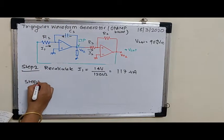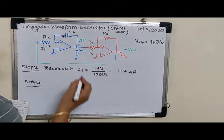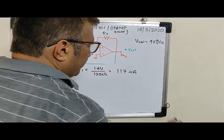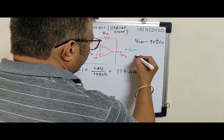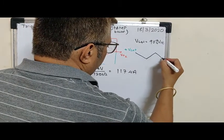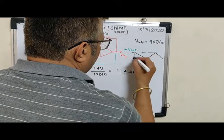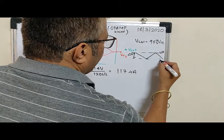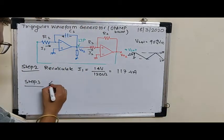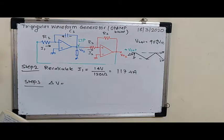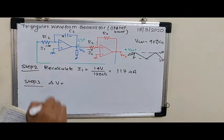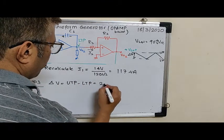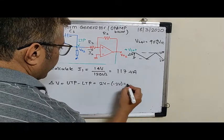Step 3. Now we already have seen that whatever is the difference, that is the delta V. If you remember, this was the output voltage and this was the delta V. It was here at UTP, here it was LTP. So naturally speaking, the delta V, that is the voltage change in the output of O1 is UTP minus LTP. That happens to be 2 volts minus minus 2 volts, that gives me 4 volts.